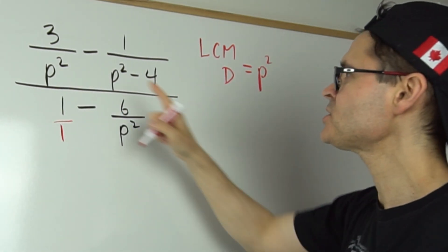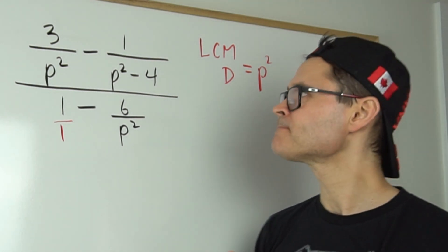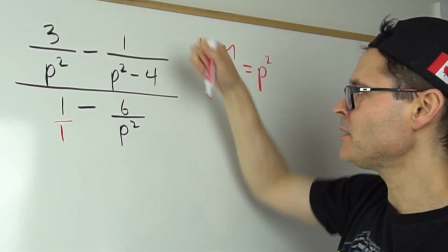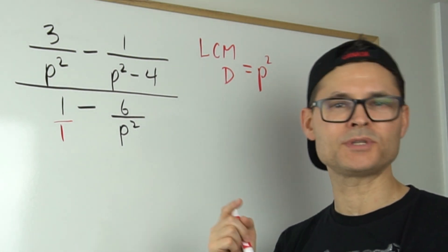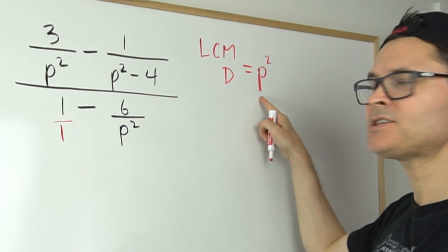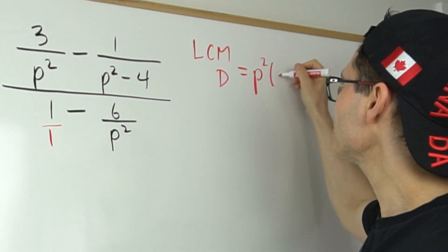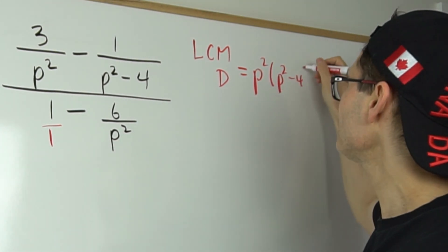So p squared goes into p squared once, and then I come to this next denominator and I say well I need something that p squared minus four goes into, and p squared is not the answer, so I have to incorporate a p squared minus four.